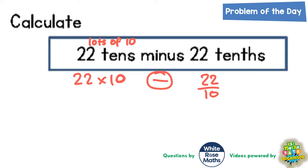Now, let's delve a little bit deeper. Well, 22 times 10 is 220. We've got a minus, that stays the same. And 22 tenths is another way of writing 22 divided by 10. Well, 22 divided by 10 is 2.2.